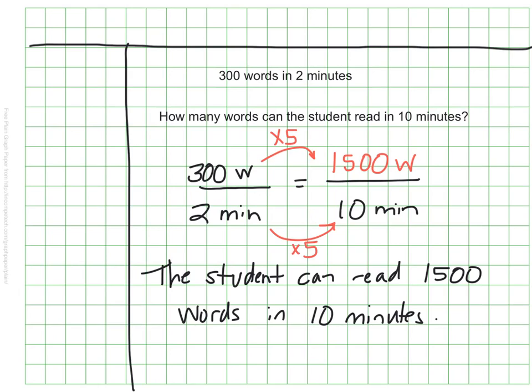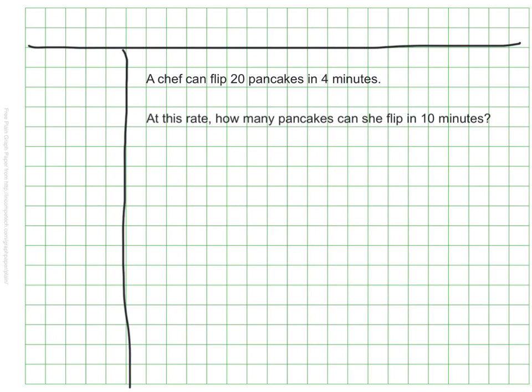Sometimes, like this example, the numbers are pretty easy to calculate. They're friendly numbers, but they won't always be. Let's do one quick example where it's not a nice friendly number. Here we have a chef who can flip 20 pancakes in 4 minutes. At this rate, how many pancakes can she flip in 10 minutes?